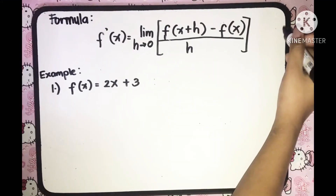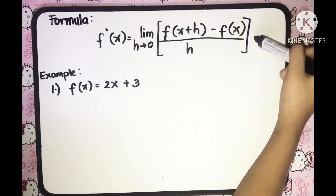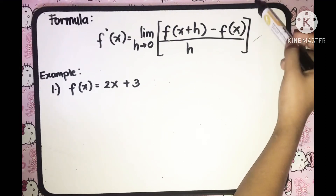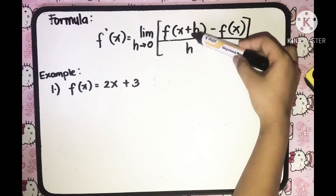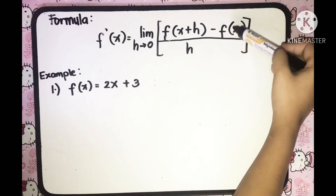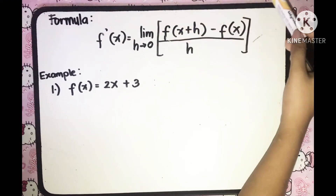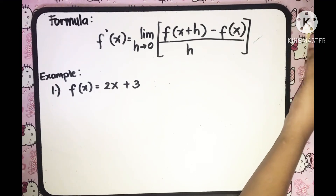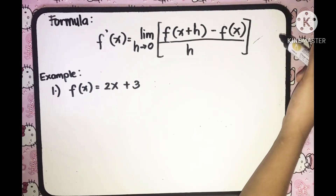The formula used in evaluating the derivative of a function is: f prime of x, which represents the derivative of a function, is equal to the limit of f of x plus h minus f of x, all over h, as h approaches 0. So basically, we need to find the derivative of a function using the limit process.